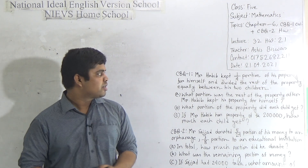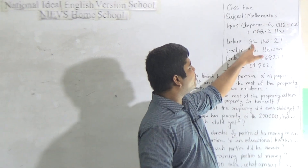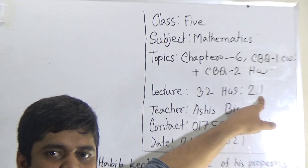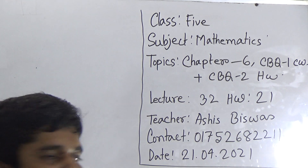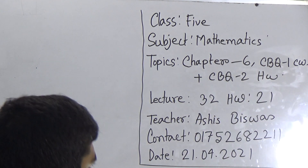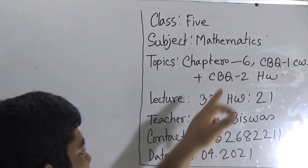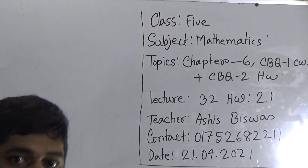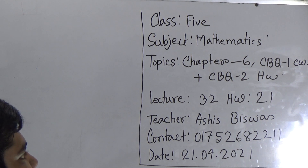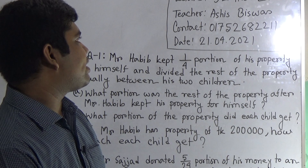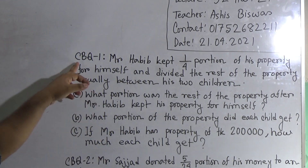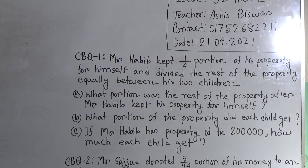Let us start our class. Today is lecture number 32 of half yearly, and today's SW number will be 21. Our today's topic is Chapter 6. From Chapter 6, we shall solve CBQ1 as your CW and CBQ2 will be your SW. You must do your assigned SW in your SW copy and submit it regularly in school every Saturday within 9 a.m. to 3 p.m.